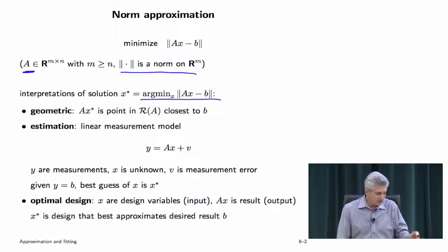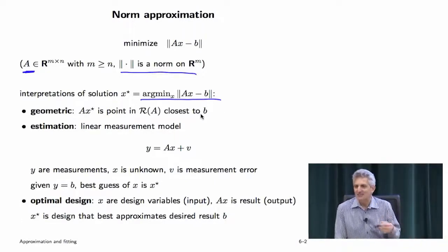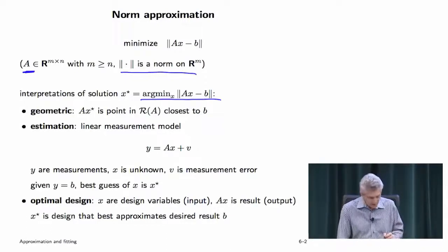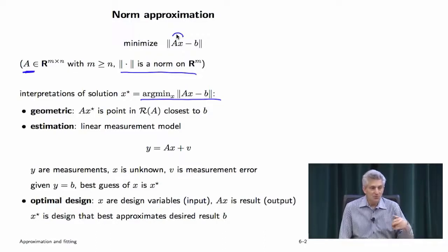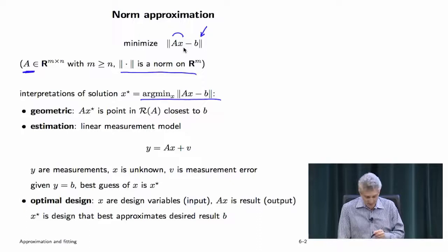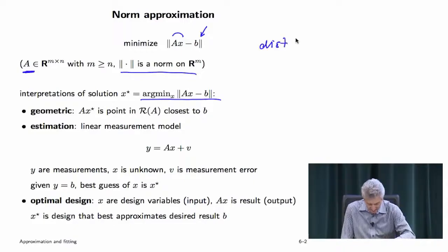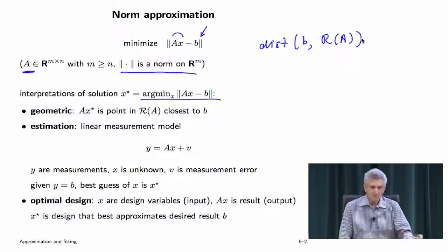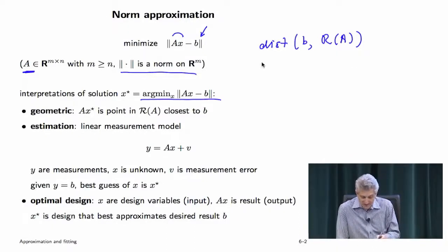What's an interpretation? There are lots of interpretations. The first one is geometric. Vectors of the form Ax, where X varies, sweeps out the range of A — that's a subspace. You have a fixed vector b, and the distance as measured by the norm between b and Ax. Basically, the optimal value of this thing is literally the distance of b to the range of A. So solving this problem is the same as saying: find me the distance under the norm of b to the range of A.